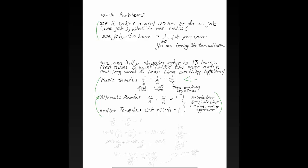Let's let A be Sue's time working alone. That'll be 13. Let's let B be Fred's time working alone. And C is going to be the time working together. So our equation is going to be 1 over 13 plus 1 over 16 equals... oh, I didn't do that, did I? Okay, yes. C over 13 plus C over 16 equals 1. Now we've got it.